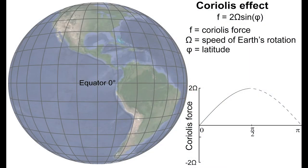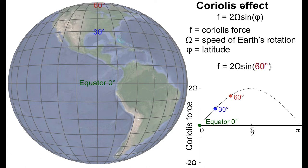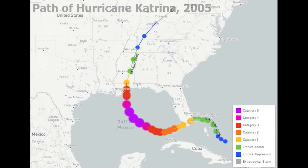The strength of the Coriolis effect — how much an object will be deflected — depends on the object's location on Earth. The Coriolis force is zero at the equator and stronger closer to the poles, which can be calculated using a sine function. By understanding the Coriolis force, we know where hurricanes typically form and can predict and model the hurricane's path, allowing for early warnings to people within those paths.